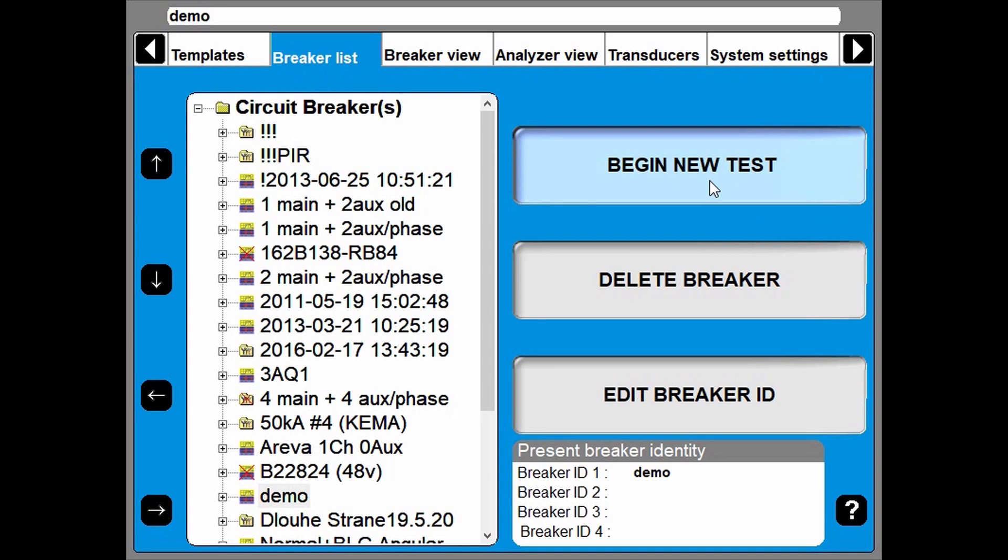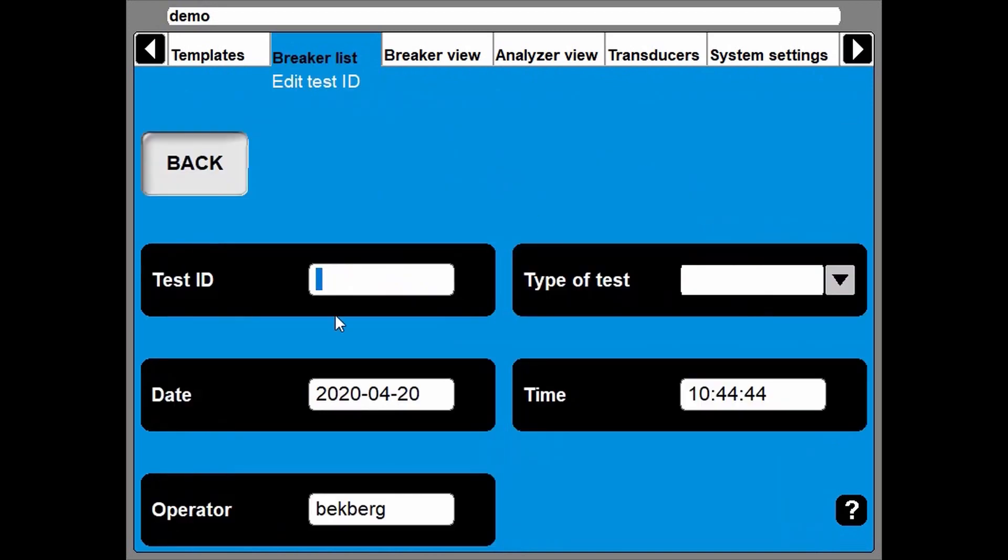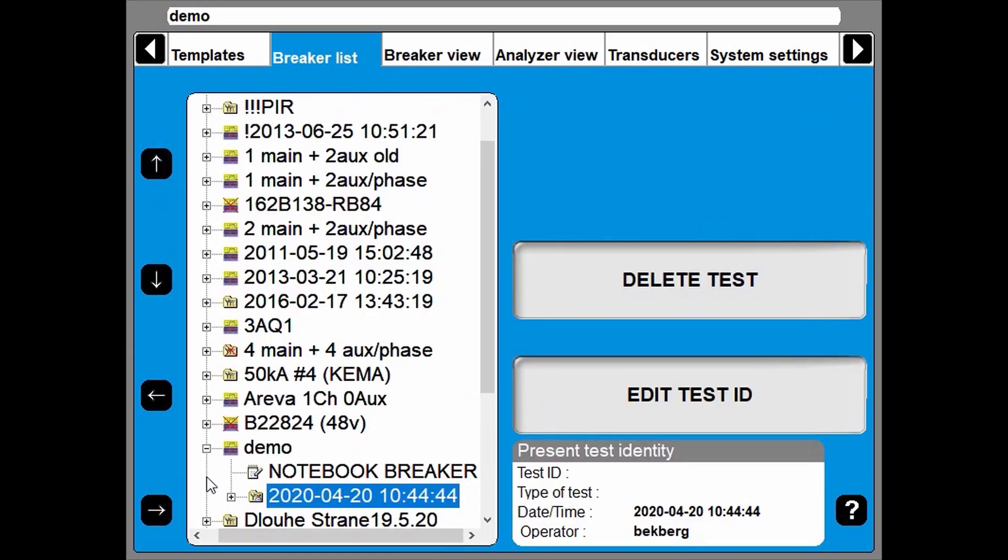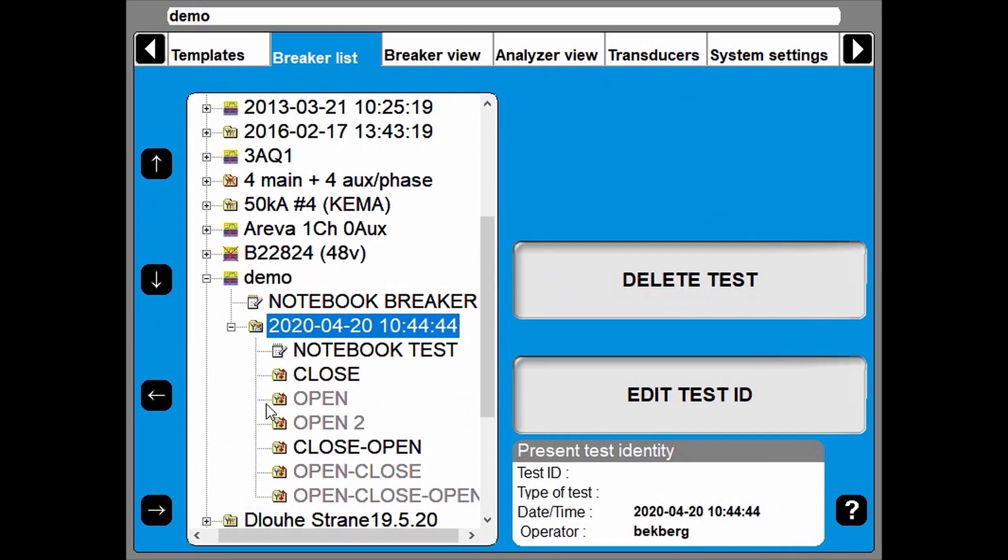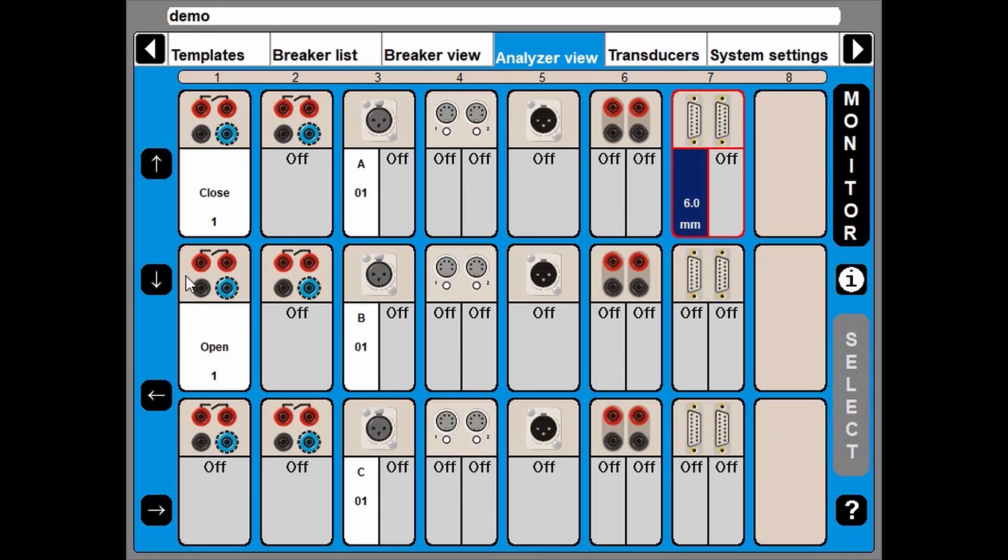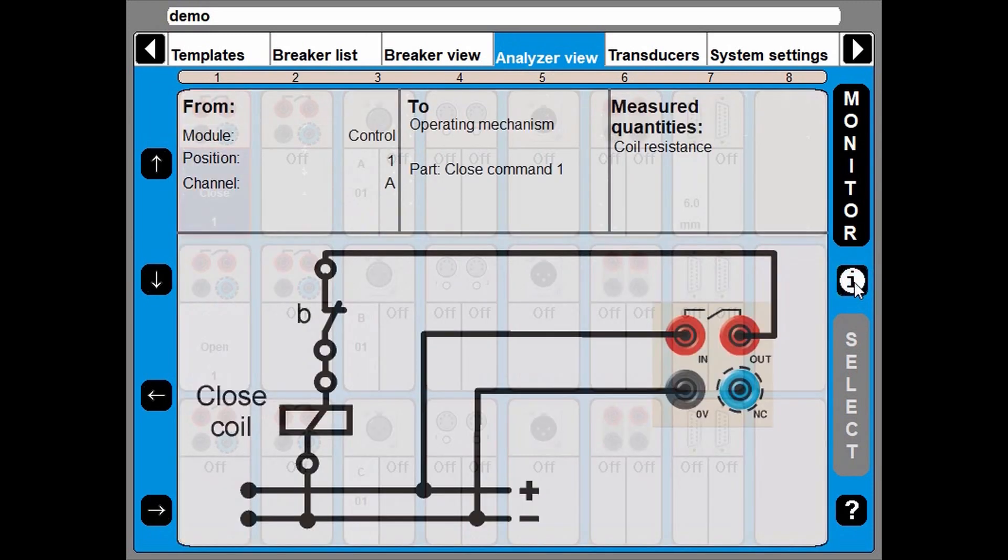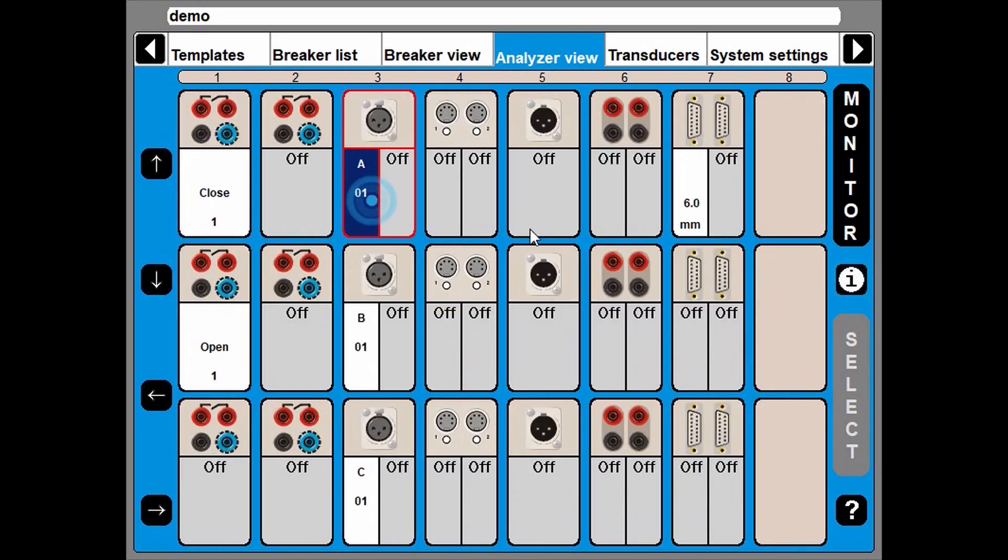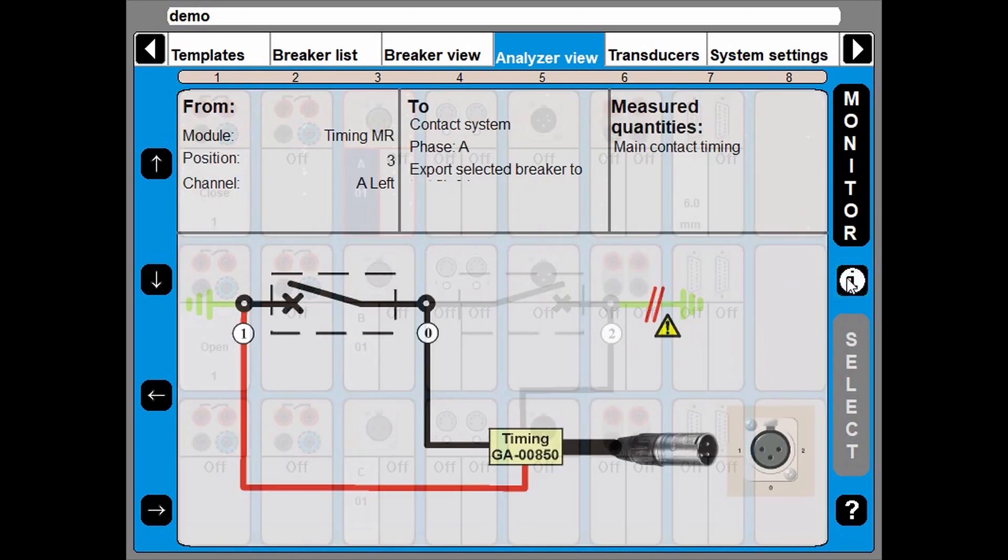I begin a new test and start with a close operation. Go to hookup and diagrams and check my connections. I can see here how to connect. The same way for all different. You can also move here in the background.